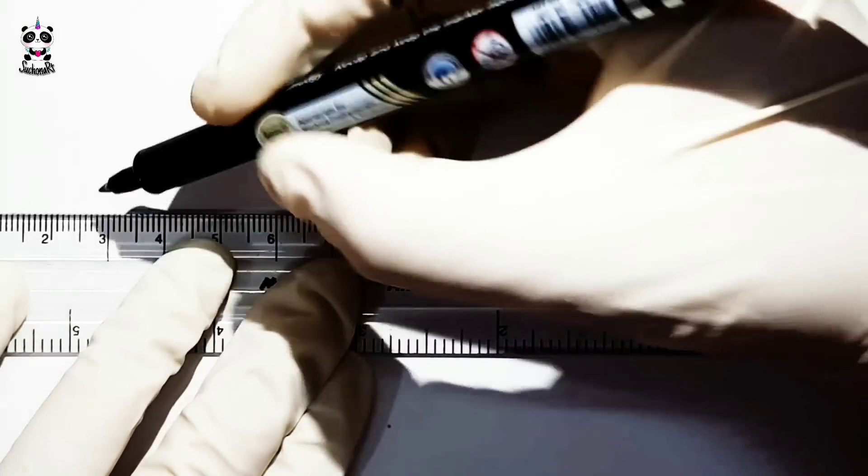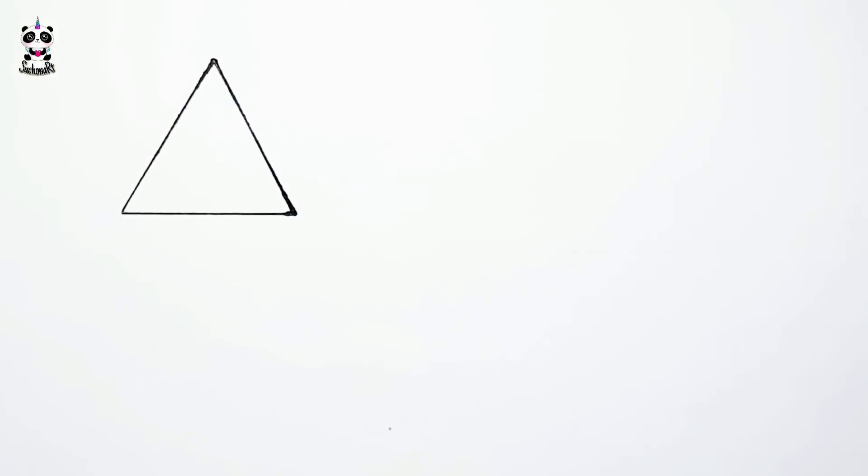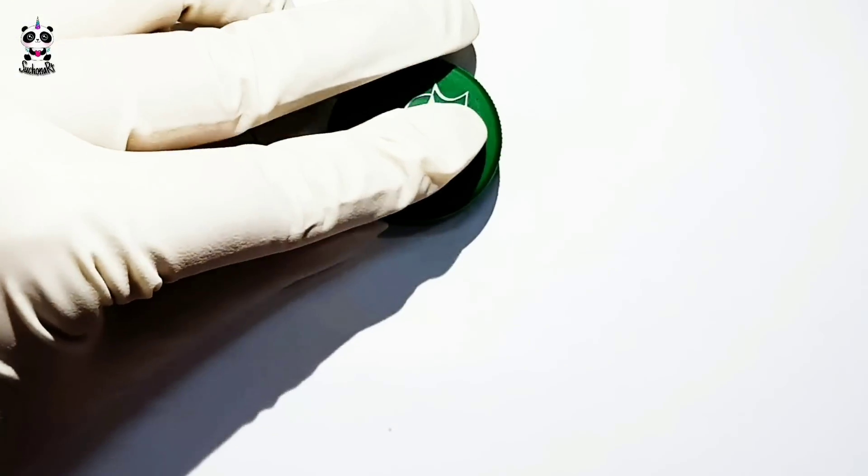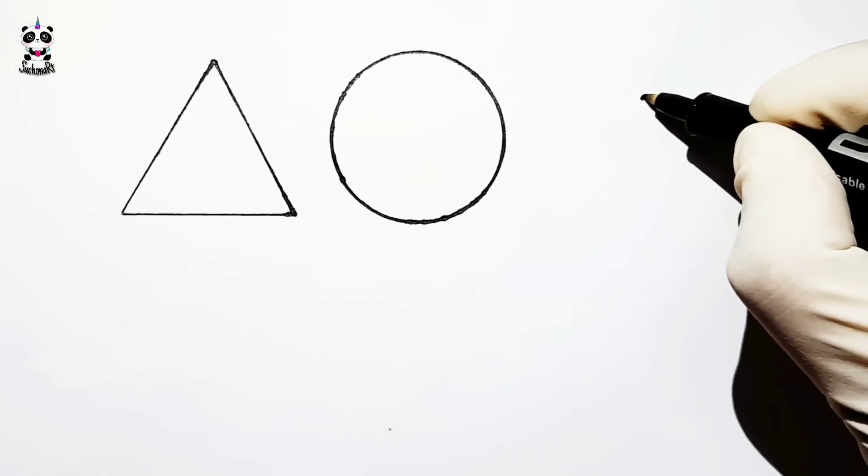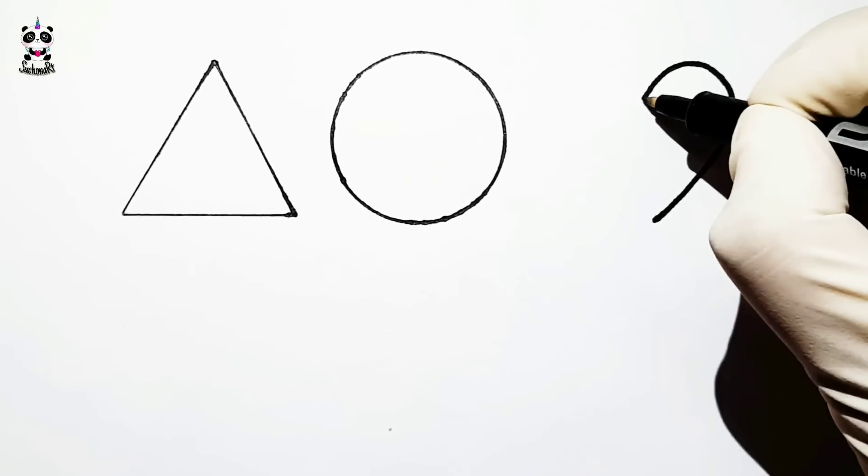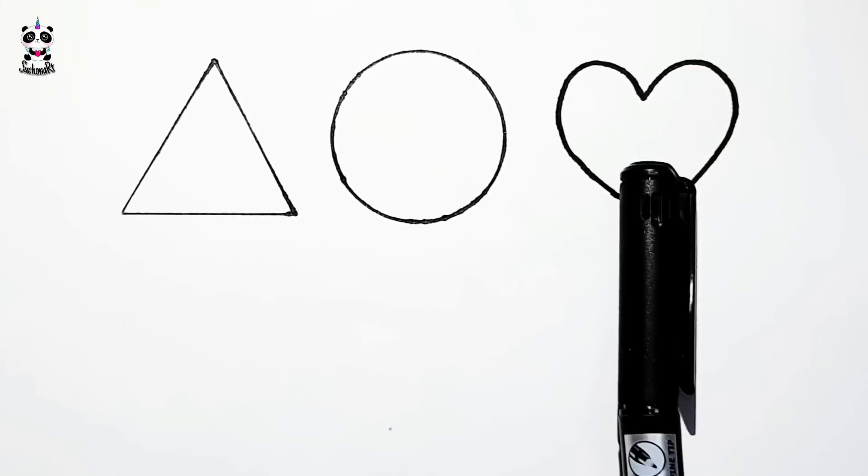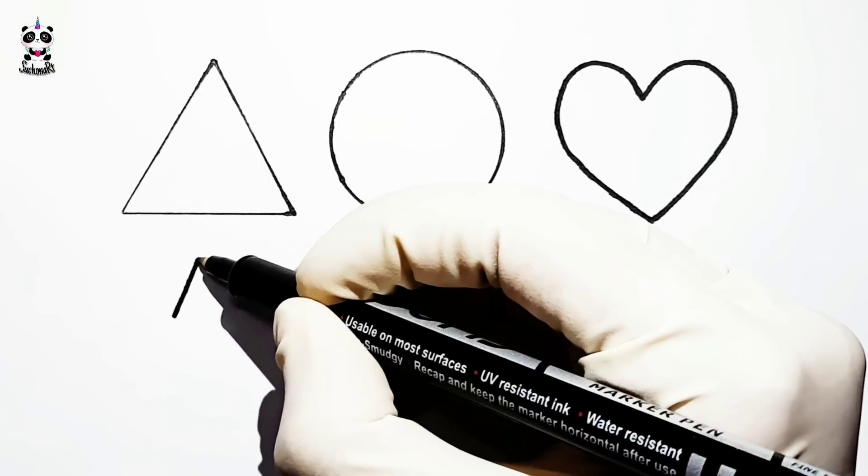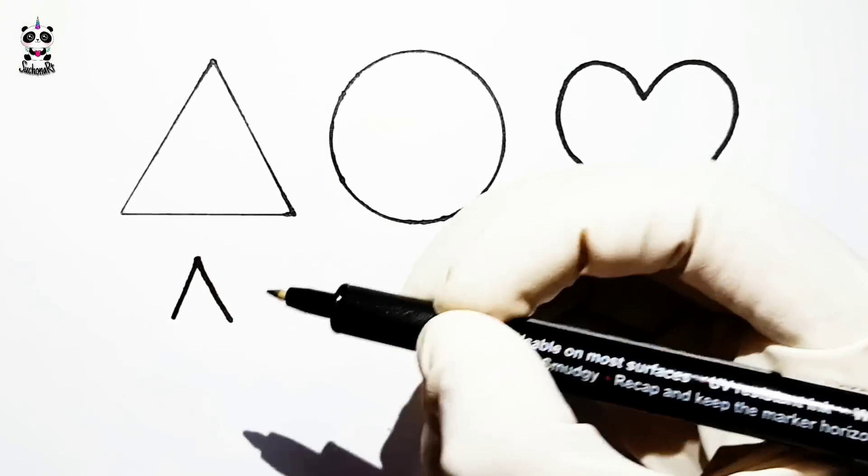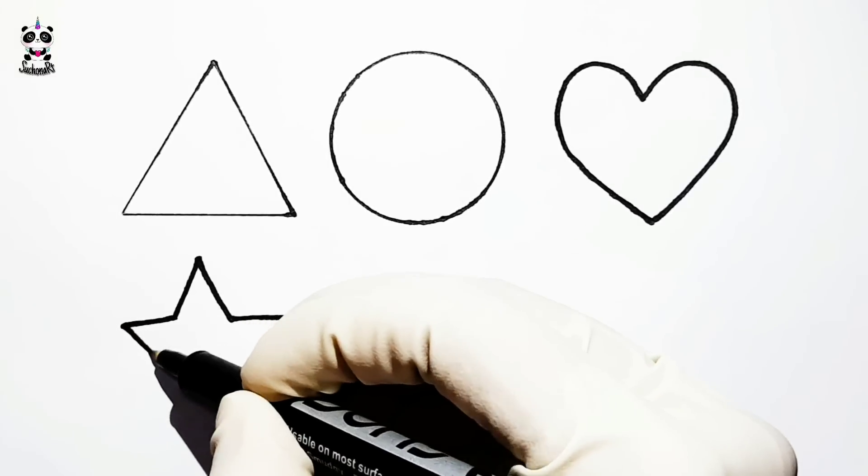H-I-J-K-L-M-N-O-P, Q-R-S-T-U-V, W-X-Y-and-Z. Triangle. Circle. A-B-C-D-E-F-G, H-I-J-K-L-M-N-O-P, Q-R-S-T-U-V, W-X-Y-and-Z. Now I know my ABCs, next time won't you sing with me?